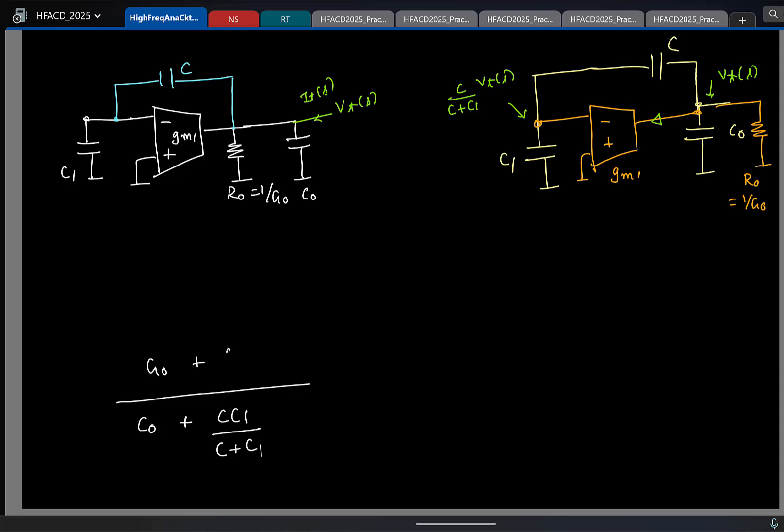Which means this will be GM1 times C. I mean this should not be surprising because if I have something like this, what is the resistance looking here? If this is GM, what is the resistance? 1 by GM, right? Same thing. Now instead of full feedback here, only a fraction of the voltage here appears here. So instead of 1 by GM or the conductance being GM, you have a fraction of GM. So this is what we expect the second pole should be.